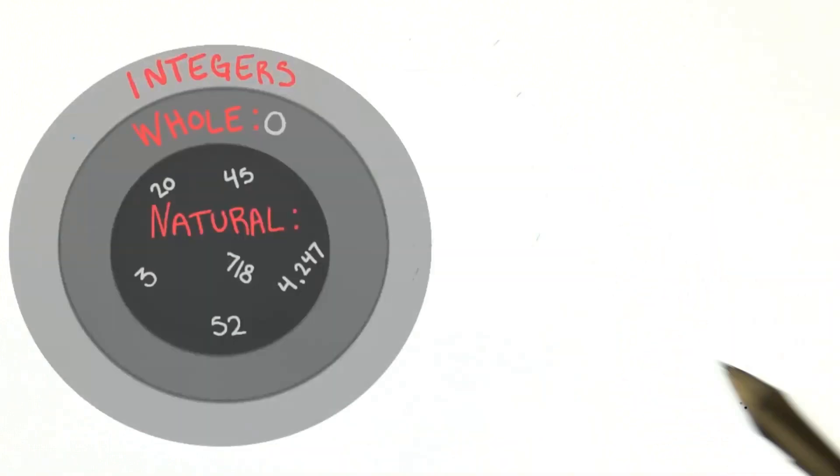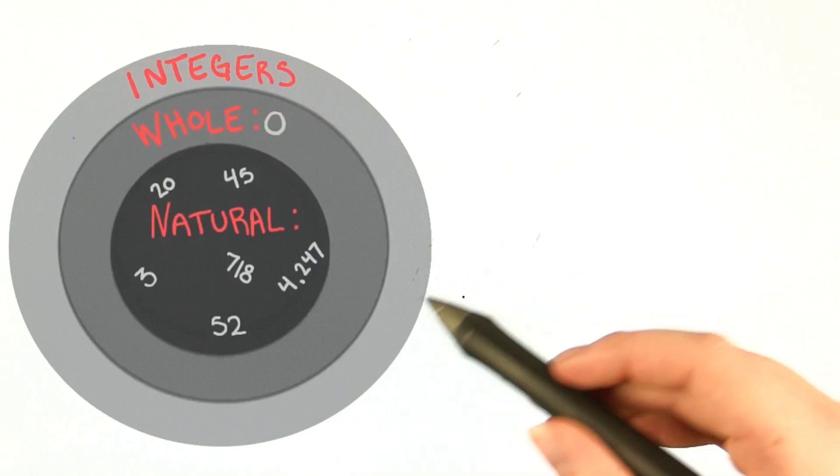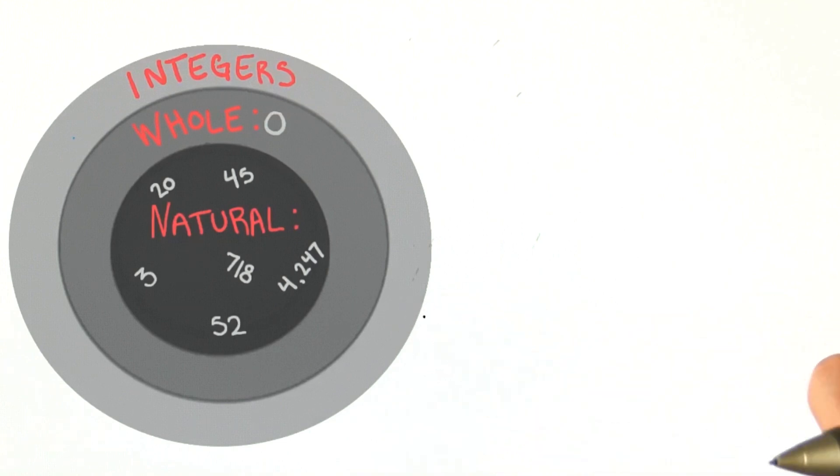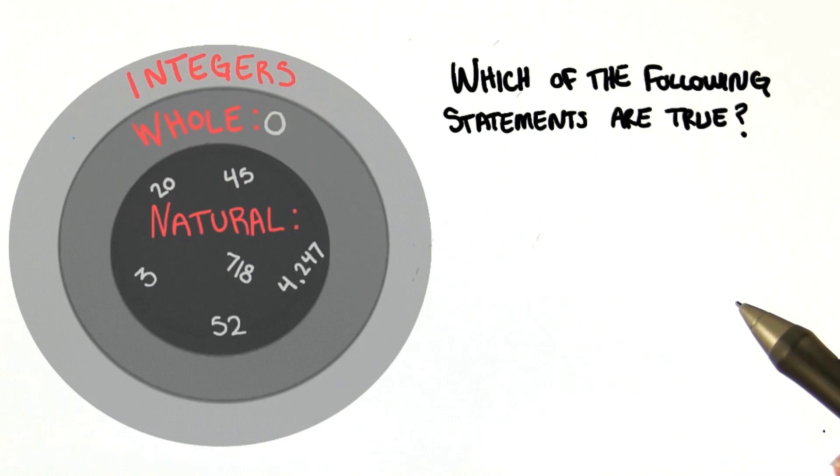Next we're going to talk about integers, which, if we represent them in our world of numbers here, would be drawn as a circle around the whole numbers like this. Even though I haven't told you anything about integers yet, can you tell me, just by looking at this diagram, which of the following statements are true?